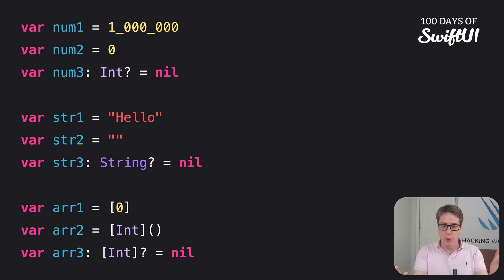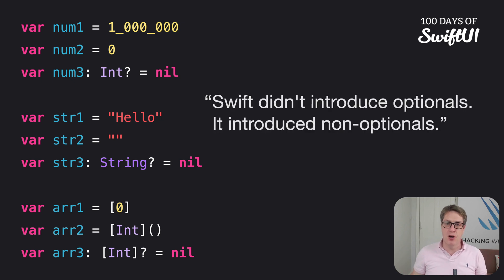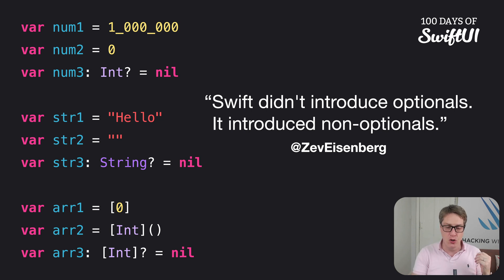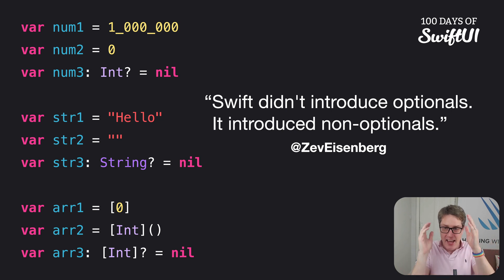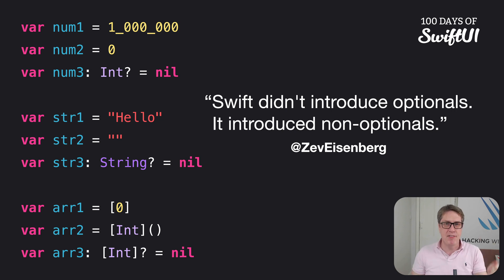This is important — optionals, but also non-optionals. There's a developer on Twitter, Zev Eisenberg, who said this: 'Swift didn't introduce optionals. It introduced non-optionals.' It's really powerful stuff, because if something is optional it maybe has a value, maybe not. But if it's non-optional, it definitely has a safe value you can work with — it could be zero, it could be an empty string, but it's definitely there.